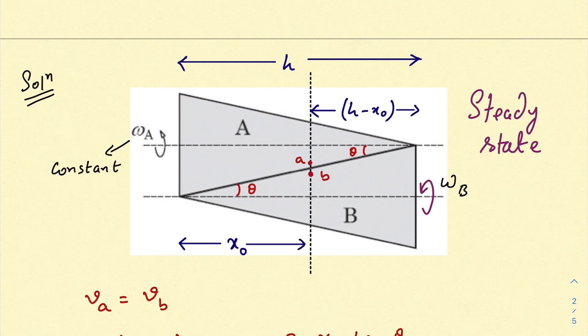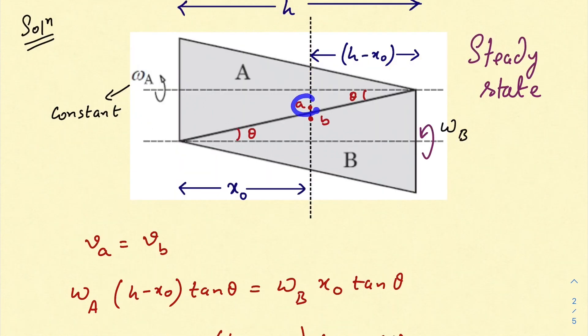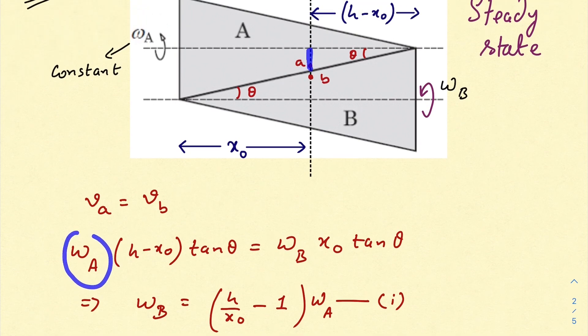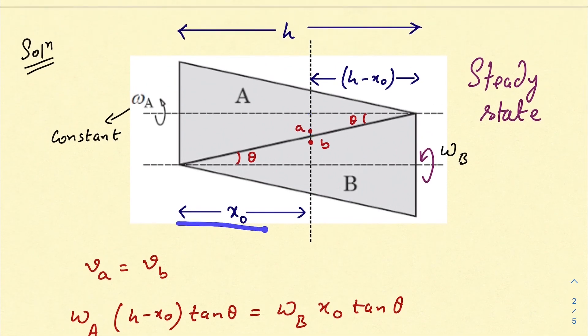And I have taken x_0 as the given distance. At point A, the velocity would be ω_A times this length, and as this is x_0, this is (h - x_0), so this should be (h - x_0) tan θ where θ is the apex angle.